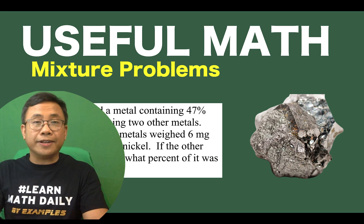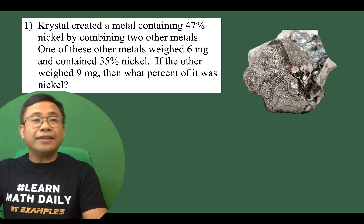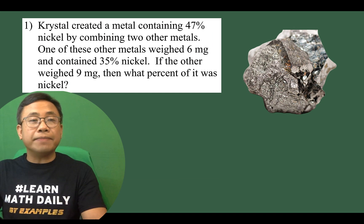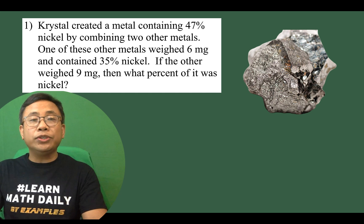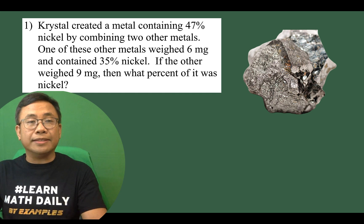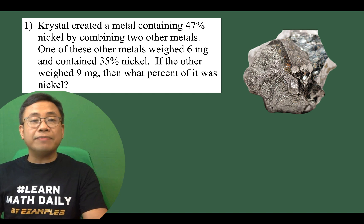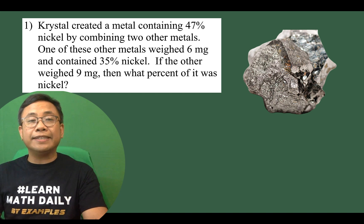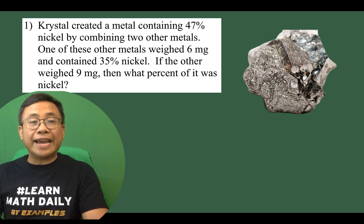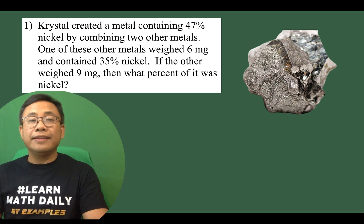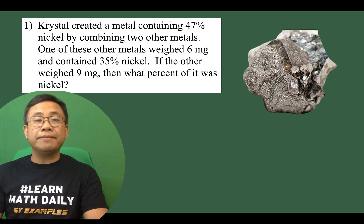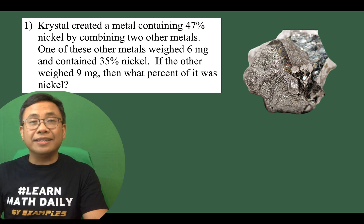Here's the first of the three problems in this video. Crystal created a metal containing 47% nickel by combining two other metals. One of these other metals weighed 6 milligrams and contained 35% nickel. If the other weighed 9 milligrams, then what percent of it was nickel?